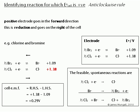And the last example involving chlorine and bromine. From the standard electrode potentials, we can see that the +1.38 is greater than the +1.09, and so the chlorine will go in the forward direction.